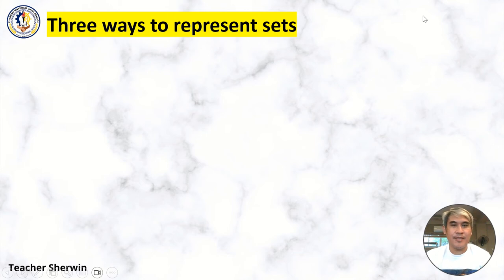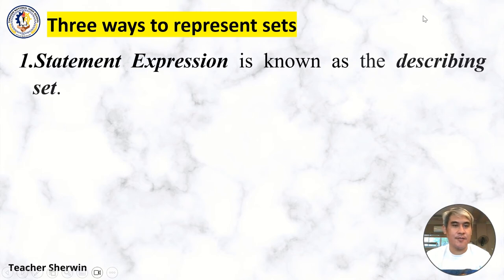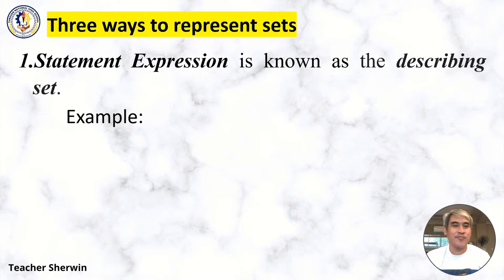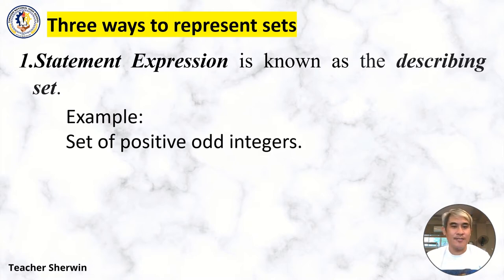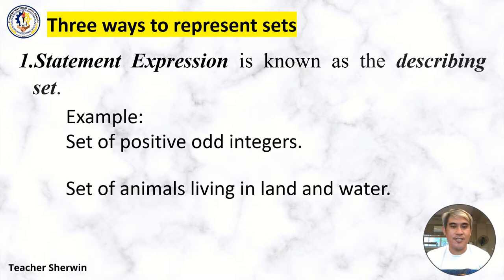There are three ways to represent sets. Number one, the statement expression, which is known as the describing set. For example: set of positive integers, or set of animals living in land and water.